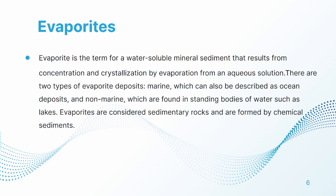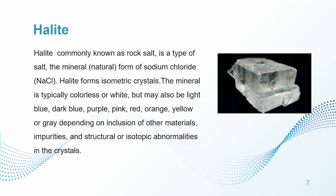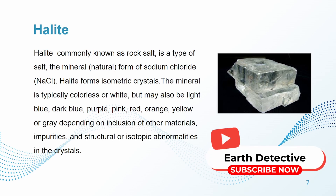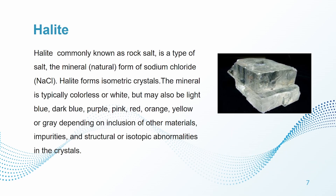Evaporites are considered sedimentary rocks and are formed by chemical sediments. For example, halite, which is commonly known as rock salt, is a type of salt — the mineral form of sodium chloride. Halite forms isometric crystals. The mineral is typically colorless or white, but may also be variable colors depending on the inclusion of other materials, impurities, and structural or isotopic abnormalities in the crystals.